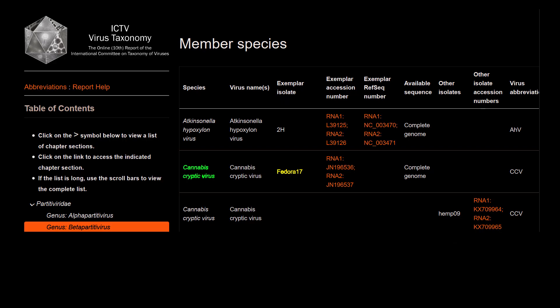Cannabis cryptic virus is a member of the beta partitivirus genus, a virus family partitiviridae. Like many viruses in its family, it is cryptic, meaning that its presence is symptomless in its host.